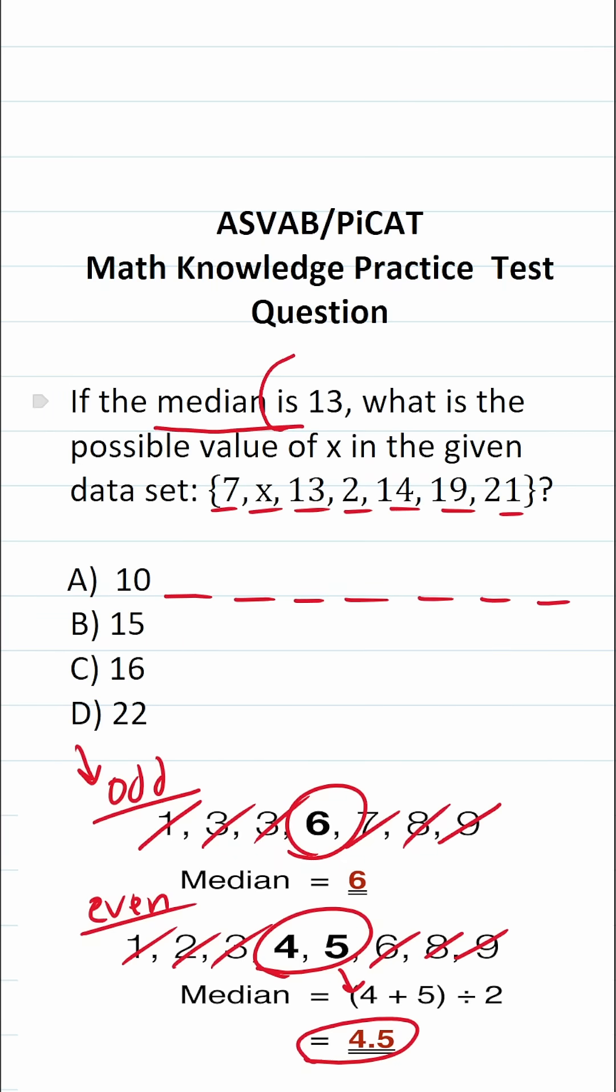According to this problem, we know our median is 13. So median of 13 is going to be right there in the middle. Let's look at the numbers in our data set. We have 14, 19, and 21. All of those values are greater than 13. And then we have two and seven.